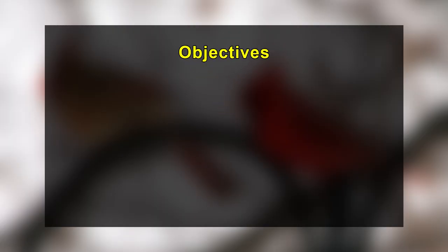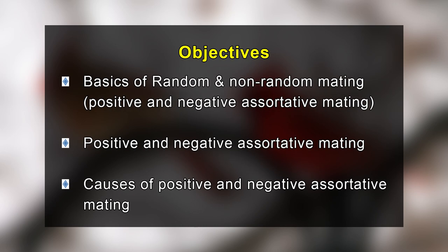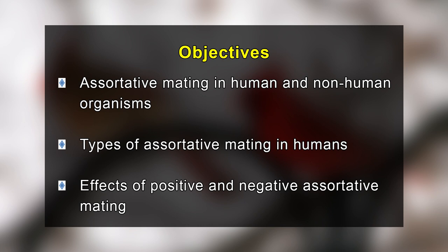Hello and welcome dear students. Today we are going to discuss the topic of random and non-random mating, that is positive and negative assortative mating. The main objectives of today's lecture are to know the basics of random and non-random mating, to understand positive and negative assortative mating in detail, to discuss their causes, to understand assortative mating in human and non-human organisms, to know the types, and finally to know the effects of positive and negative assortative mating.